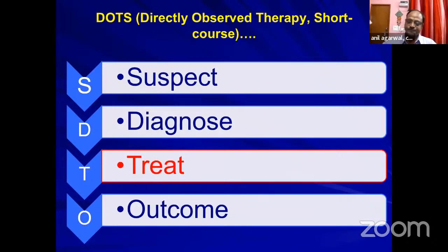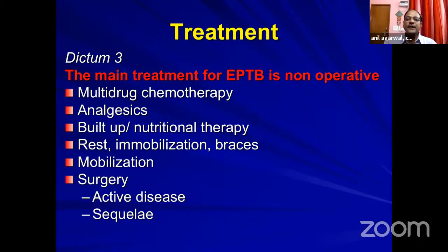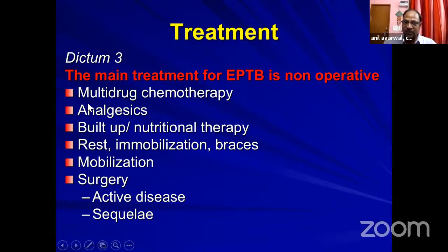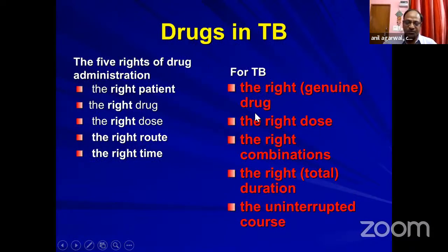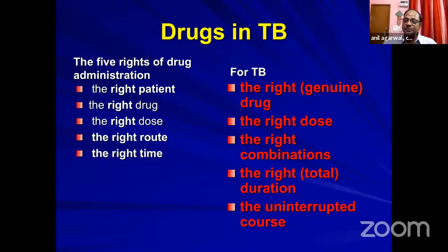Moving to the treatment section — we always say anti-tubercular treatment, but the patient also requires supporting treatment: analgesics, build-up therapy, immobilization, braces, and surgery in designated cases. For drug administration, for tuberculosis the rights are: right patient, genuine drugs, right dose, right combination, right duration, and an uninterrupted course. We examined prescription patterns — in a survey of 52 respondents, there were 32 prescription variations, most notably with ethambutol being given anywhere between 0 to 18 months.